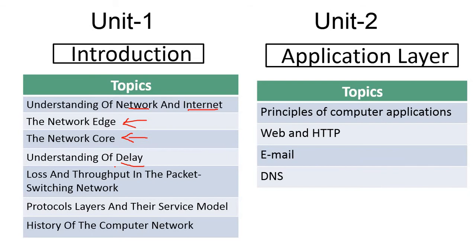Then we discussed propagation methods, types of satellites, and types of antennas. We also categorized networks into three broad categories: local area network, metropolitan area network, and wide area network. We also discussed protocol layers and their service model in terms of the OSI model and the TCP/IP model. That was everything about the introductory part.